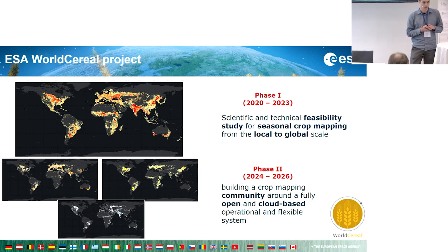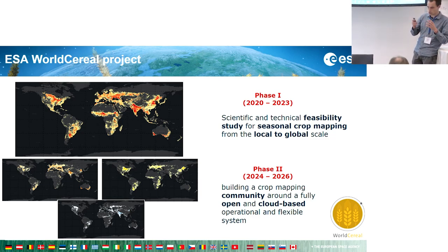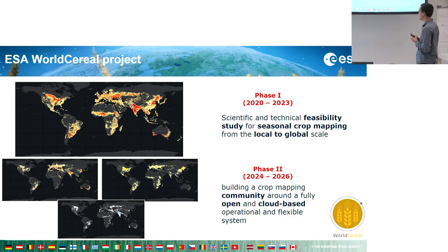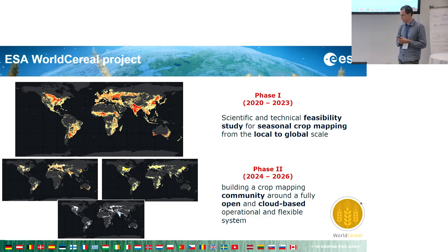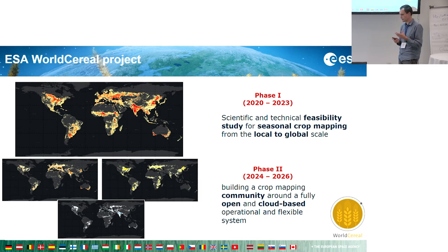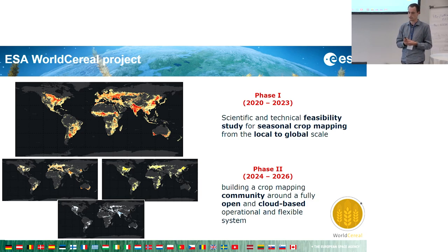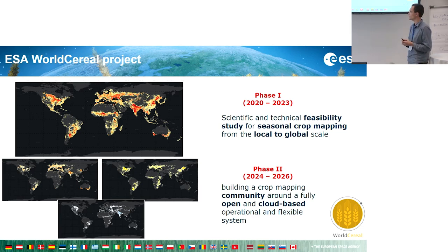Originally, this project was launched by ESA as a feasibility study — technically and scientifically — to create the first global crop type maps, to actually see if that is possible, because it had never been done before. This resulted in global crop type maps of two different crop types and was quite successful. That's why we got a three-year extension, shifting focus from a feasibility study to an operationalization study, to build a crop mapping community around a fully open, cloud-based, operational and flexible system.